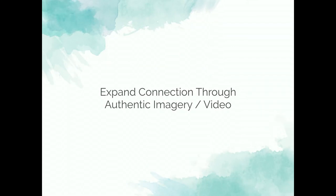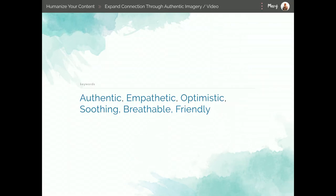Another way to give a human touch to a website is through authentic imagery and video. At Digital Echidna, one of the other things we do when first designing a site is define a set of keywords — the brand essence or connotations we want the user to have with our website. For a mental health site we might use keywords like authentic, empathetic, optimistic, soothing, breathable, or friendly. Once we have these key terms defined, any time we put images or video into our designs we look at those terms and ask if the images are in alignment.